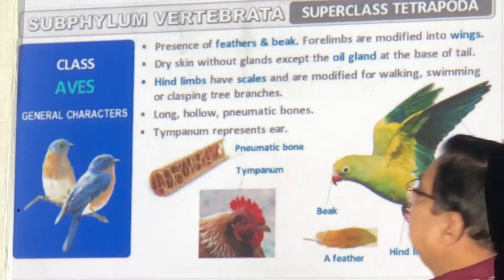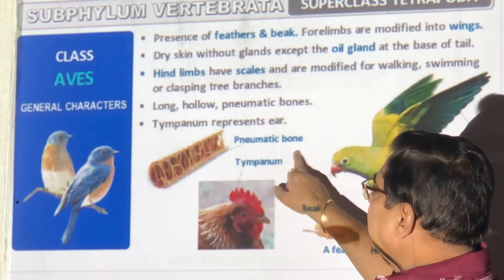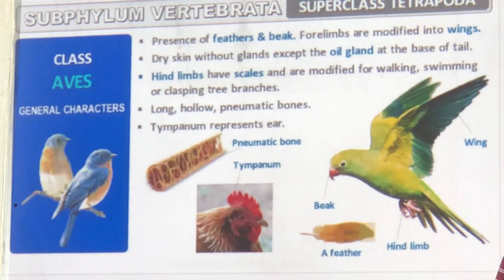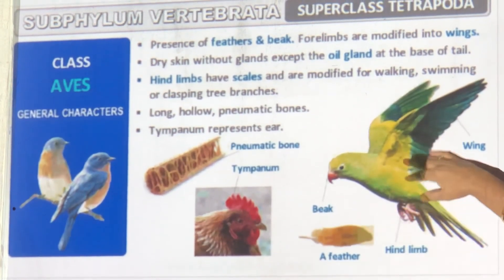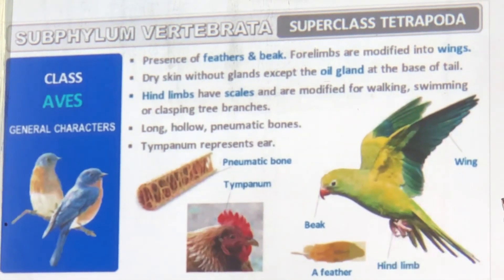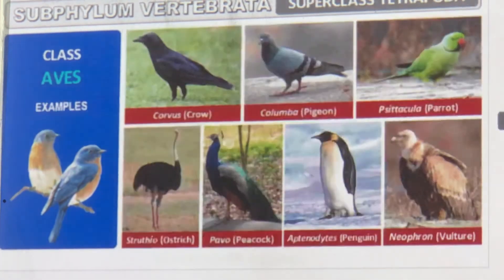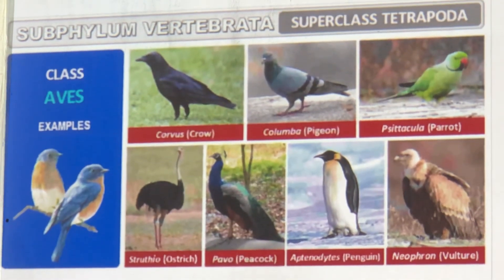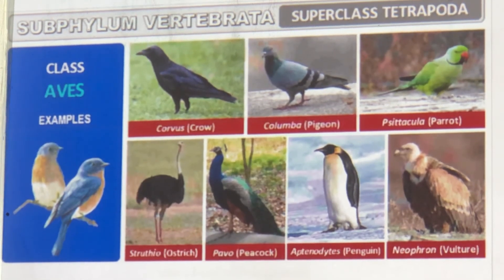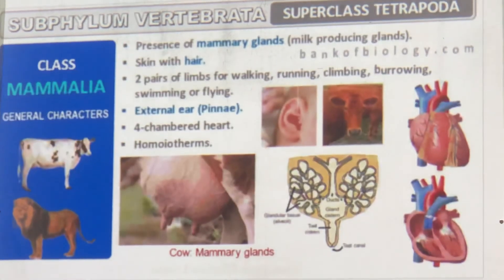Now birds — Aves. The bones are hollow and pneumatic, like an aeroplane strut. A tympanum (ear drum) is present. Feathers and a beak are there. The hind limbs have grasping claws and the forelimbs have wings. Scales are visible on the legs. Examples: Corvus (crow), Columba (pigeon), Psittacula (parrot), Struthio (ostrich), Pavo (peacock), and Neophron (vulture). Scientific names are given for your CBSE/PMT exams.